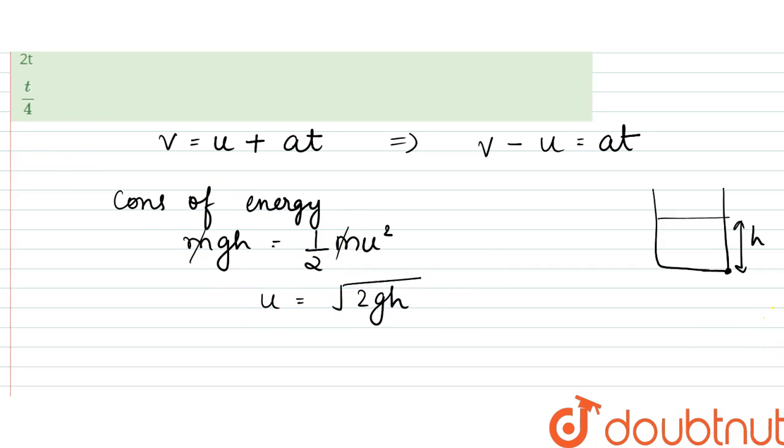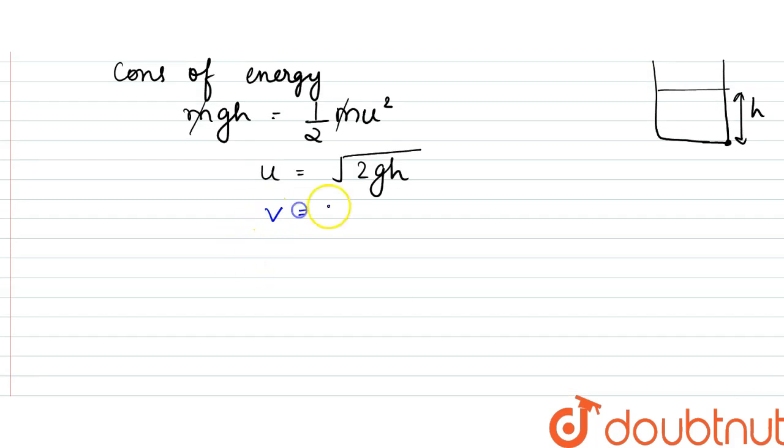motion written above: v - u, where v = 0. So 0 - √(2gh) = -gt, since gravity is acting. From here, t =